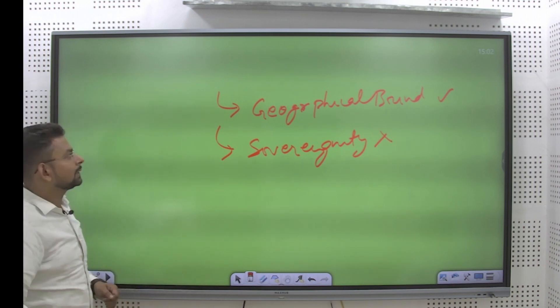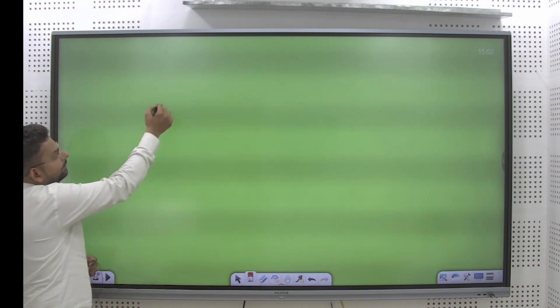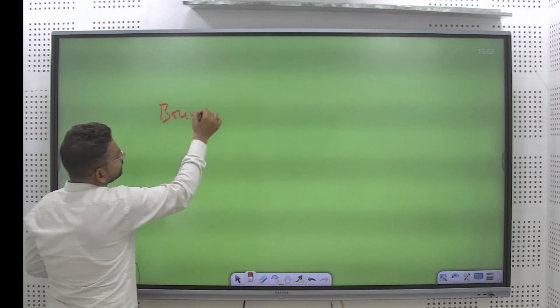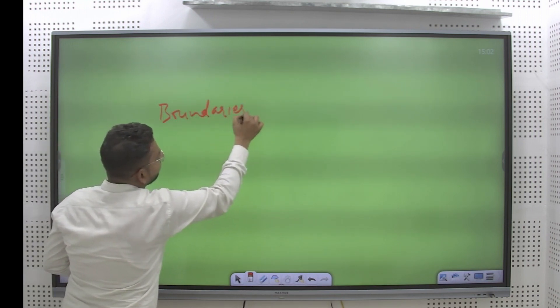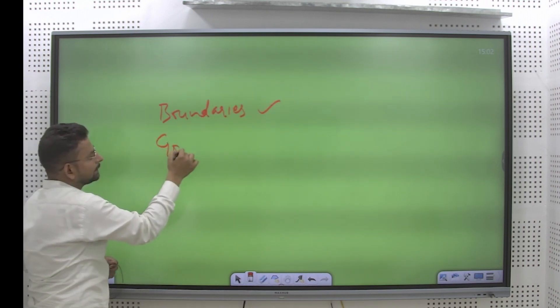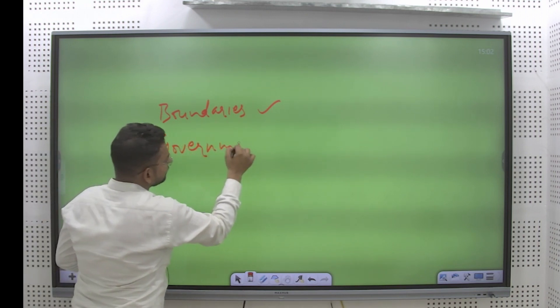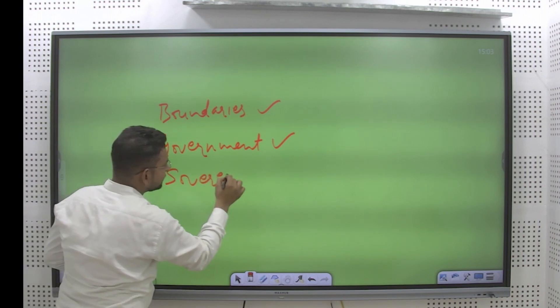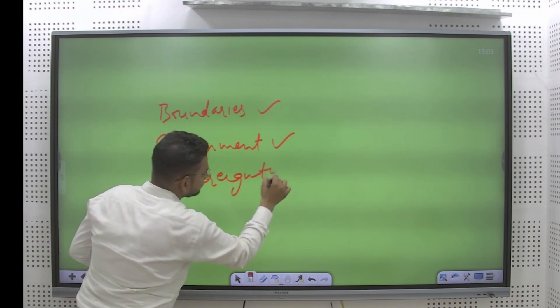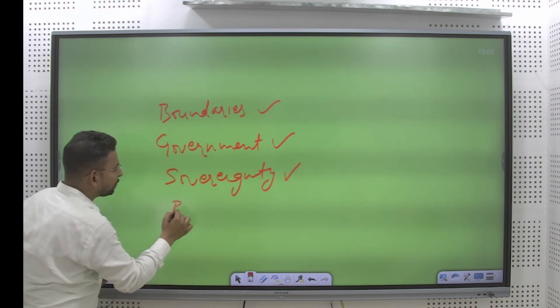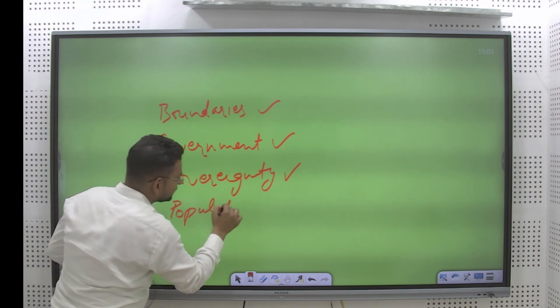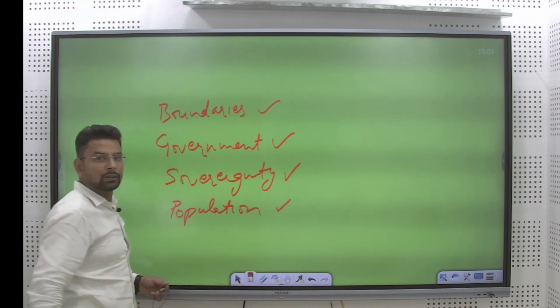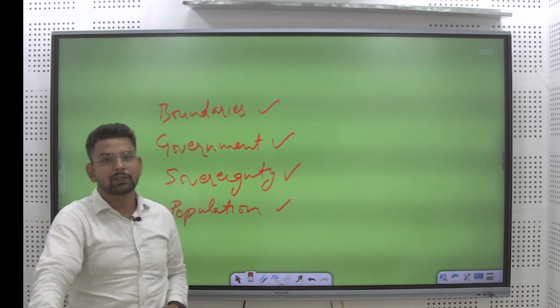But now, condition has been changed. India, at the present context, is having the boundaries, having the government, having the sovereignty, and having the population or the citizens. So we can conclude India is a state.